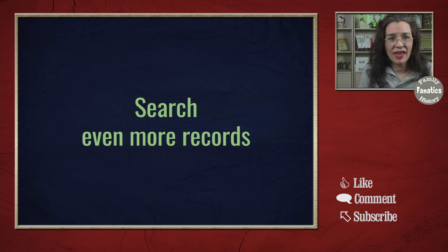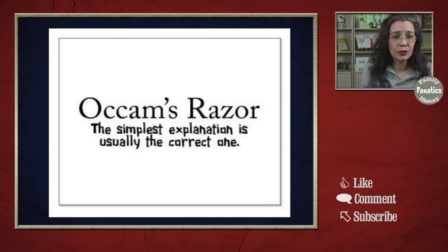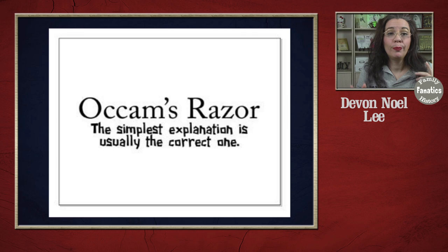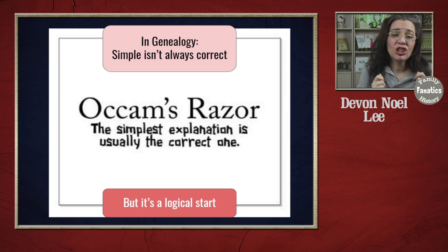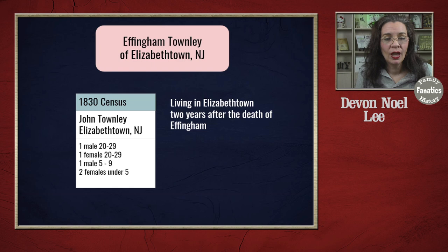There are two men: John in Elizabethtown, New Jersey, and John in New York City. Let's apply Occam's razor — the simplest explanation is likely the most accurate. In genealogy you can't always use Occam's razor, but it's better to go with the simplest until you have evidence that disproves the theory. My current theory is that the gentleman named John Townley who was in Elizabethtown, New Jersey in 1830 is living there two years after the death of his father. While he could have moved to other locations in the 1830 and 1840 census, it just doesn't line up.